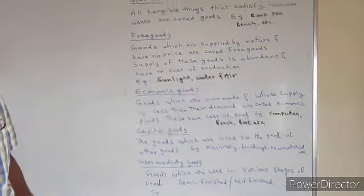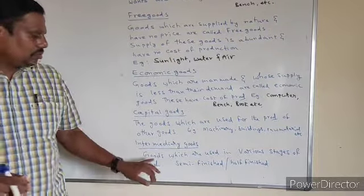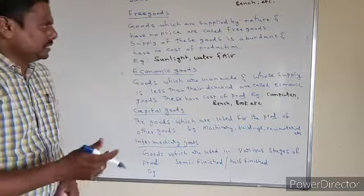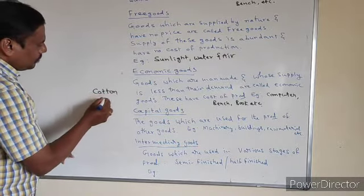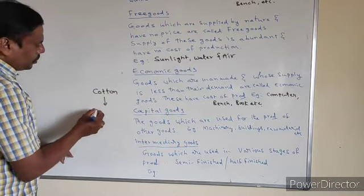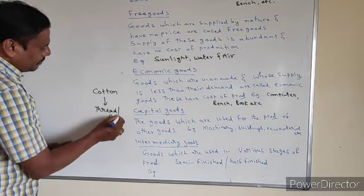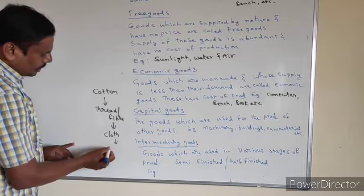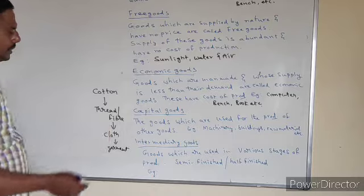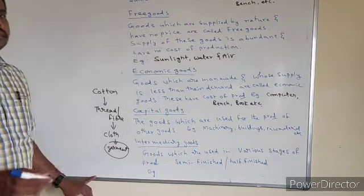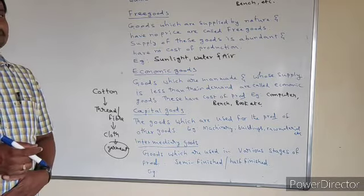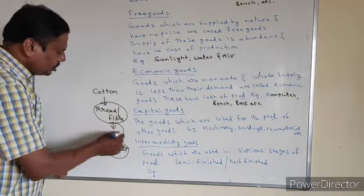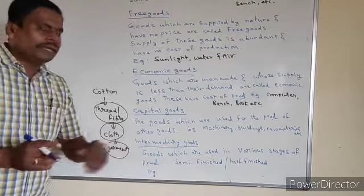Next, intermediary goods. Intermediary goods are goods which are used in various stages of production. While doing production, we go through different stages. For example, take cotton: from cotton we get thread or fiber, from fiber we get cloth, from cloth we get a garment. You cannot get a garment directly — you cannot skip the intermediate stages. The thread is used in making cloth, cloth is used in making the garment. So goods used in the middle of production are called intermediary goods.